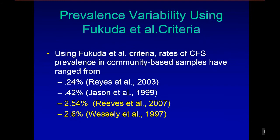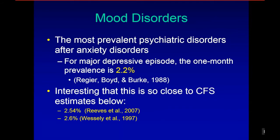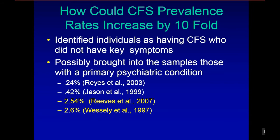Looking at prevalence variability using Fukuda criteria, rates in community-based samples go from 0.24%, 0.42%, up to 2.54% by Reeves, and 2.6% by British colleague Wessely. The most prevalent psychiatric disorders after anxiety are major depressive disorders, with a one-month prevalence rate of 2.2%. It's interesting that it's so close to these CFS estimates of 2.54% and 2.6%. How could CFS prevalence rates increase by 10-fold? It's possible they identified individuals without key symptoms or brought in those with a primary psychiatric condition.